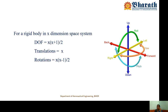There are 3 translation motions and 3 rotational motions, and that is why any rigid body in a three-dimensional space system has 6 degrees of freedom. These are formulated to calculate the degrees of freedom: number of translations and rotations for any rigid body in an x-dimensional space system. For example, consider 3-dimensional space. The degrees of freedom equals x(x+1)/2. Since x is 3, that gives 3×4/2 = 6. So in 3-dimensional space, the degrees of freedom is 6.